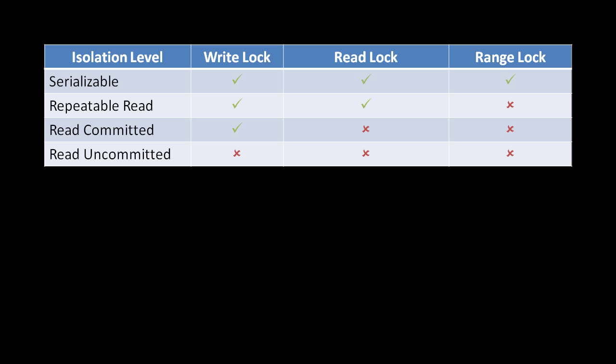At the highest level of isolation, serializable, a transaction will acquire all three kinds of locks: write locks, read locks, and range locks. Locks are a tool used to resolve concurrency issues, which work by acquiring a lock on a piece of data — that is, staking a claim on it such that all other actors who wish to use that piece of data either are prevented from using it while it's locked, or are expected, if not required, to check whether a lock has been acquired before they attempt to use the data.